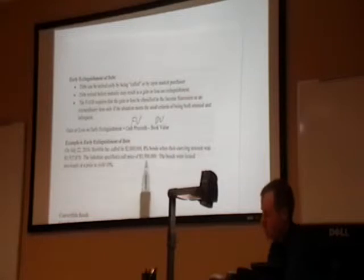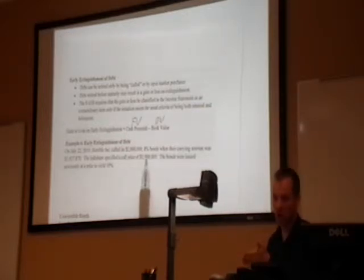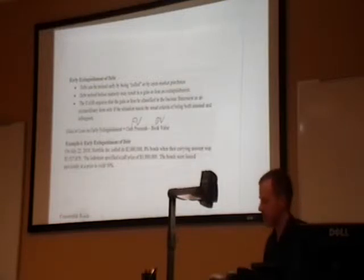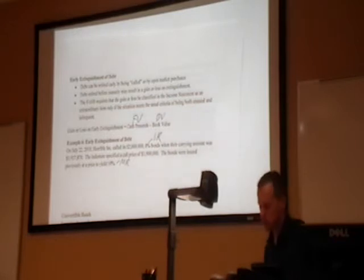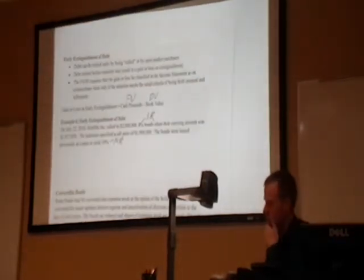The indenture specified a call price of $1.9 million. In other words, in the contract, it says within this time period, we're obviously within it, otherwise we couldn't do this. We can pay this back for $1.9 million dollars. That's what the contract says. And that's what we're going to do. The bonds were issued previously at a price to yield 10%. In other words, this is the market rate of interest. This is the stated rate of interest. All those things continue to be true. So what we're going to do is we're going to record the journal entry for the early extinguishments of this debt. When we call the debt, what does that journal entry look like? So first of all, we know how much we're going to pay to get rid of this debt.